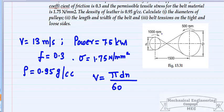From the diagram, the input speed is 1000 rpm and the output speed is 500 rpm. The center distance between the two pulleys is C = 1500 mm. Here small n = 1000 rpm for the smaller pulley and capital N = 500 rpm for the larger pulley. The diameter is unknown but velocity is given as 13 meters per second.